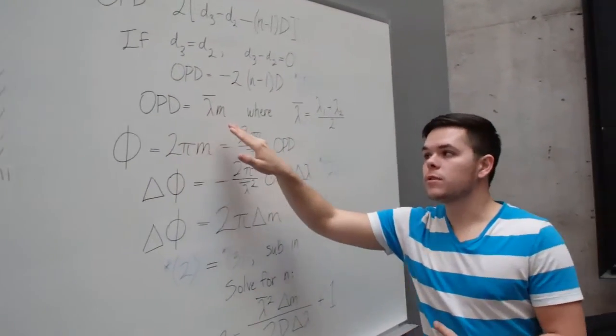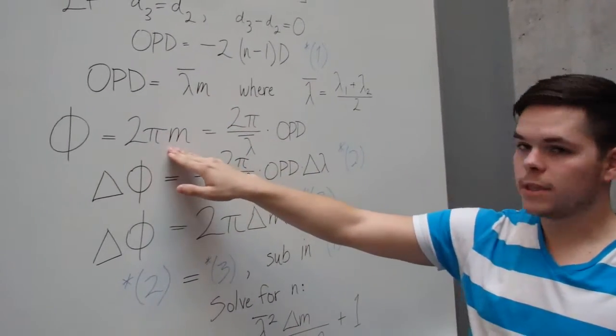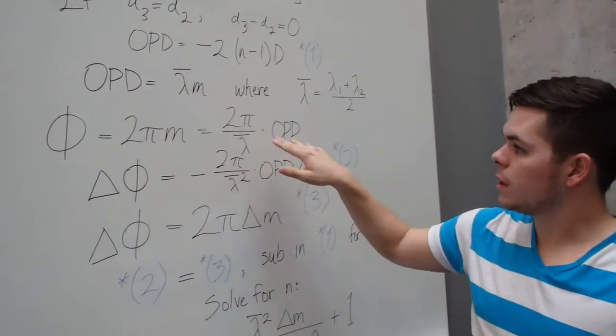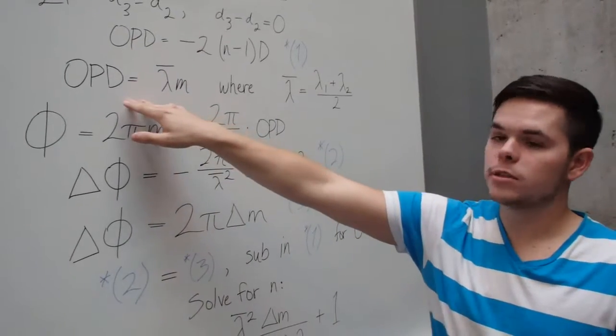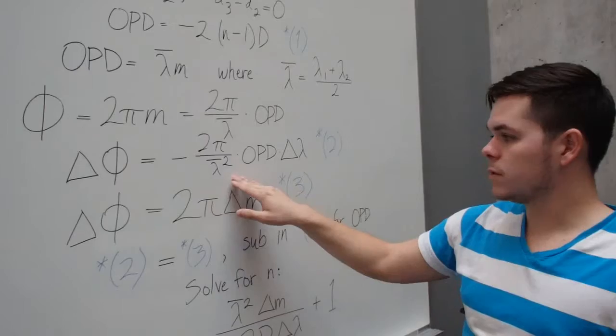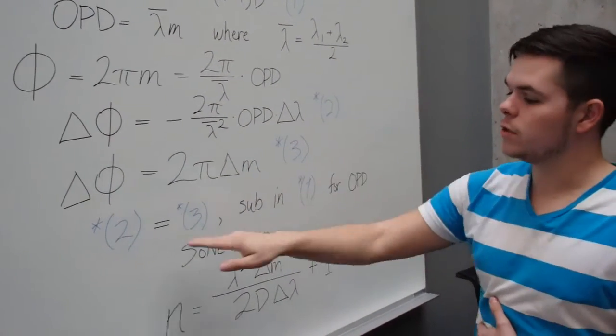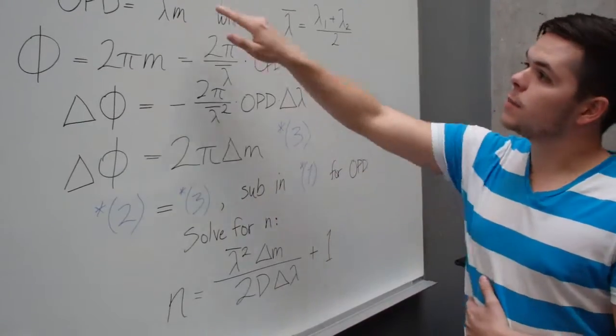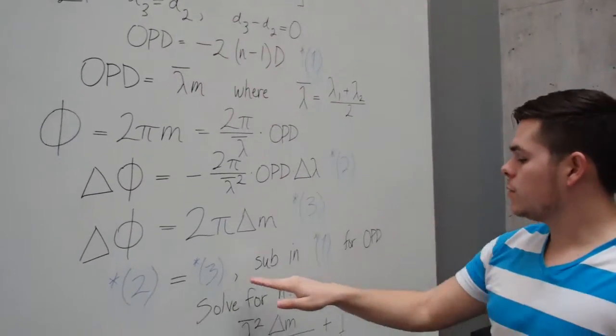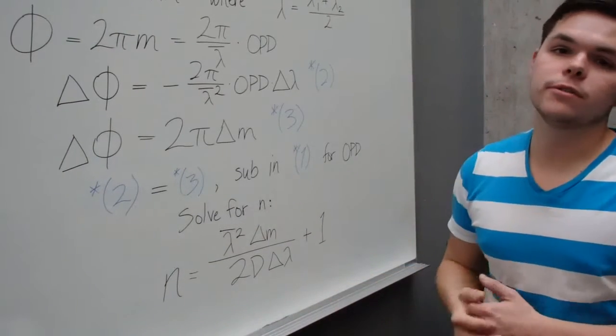Knowing that the OPD is also equal to the wavelength times the fringe number and that the phase is equal to 2π times the fringe number, you can come up with two values for the phase, subbing this OPD back in. Then you take the derivative of both of these, one with respect to the wavelength, one with respect to the fringe number, and come up with two equations that you can set equal to one another. Subbing in that OPD back into one and then rearranging everything, you can solve for n and get an equation for the index.